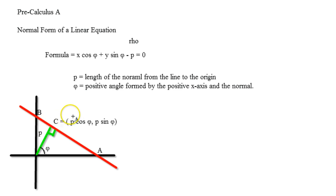Phi is the positive angle formed by the positive x-axis and the normal. And as you can see, you can rewrite C in terms of rho times cosine of phi, and rho times sine of phi. So rho is the length of the line that is going to be perpendicular to any line, and then this right here is going to be phi.